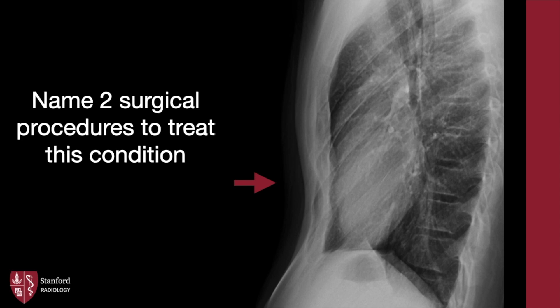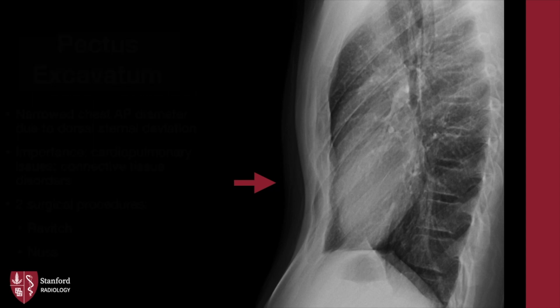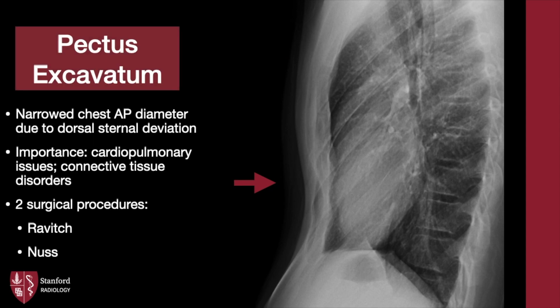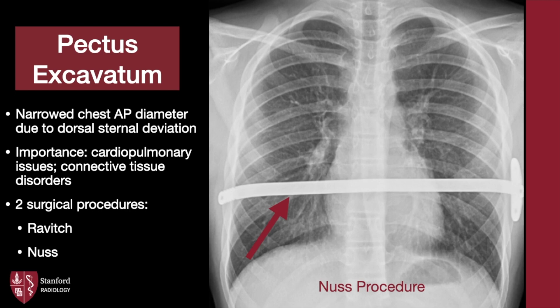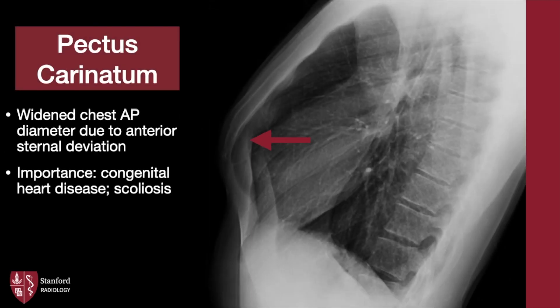Name two surgical procedures to treat this condition. This is pectus excavatum, wherein dorsal sternal deviation leads to a narrowed anteroposterior diameter of the chest. Important clinical associations include mechanical cardiopulmonary issues due to a smaller thoracic ribcage, and associations with connective tissue disorders. Note the indistinct appearance of the right cardiac border on this AP chest radiograph, a common finding. Two surgical interventions include the Ravitch and the more minimally invasive Nuss procedure, whose horizontal metal bar is depicted here. Pectus excavatum contrasts with pectus carinatum, wherein a widened chest AP diameter is due to anterior sternal deviation, with associations with congenital heart disease and scoliosis.